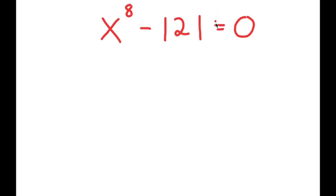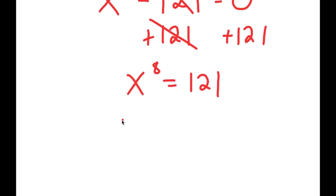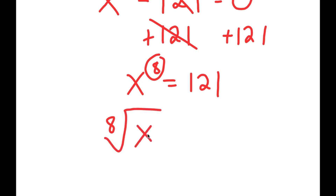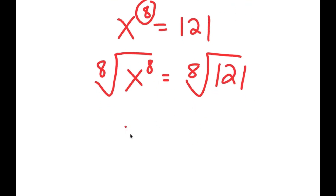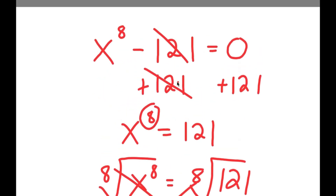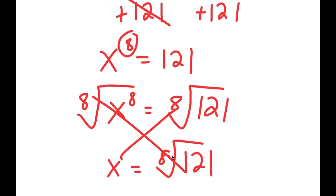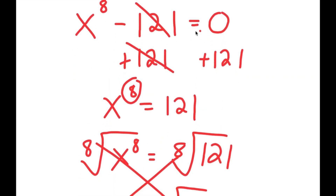What most people would think to do is add 121 on both sides to get x to the power of 8 equals 121, then take the 8th root on both sides to get the 8th root of 121. But this method is actually wrong, because there are actually many more solutions than just two to this equation.